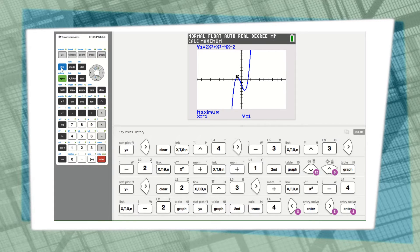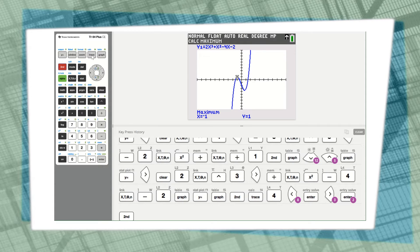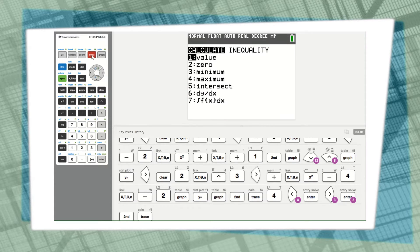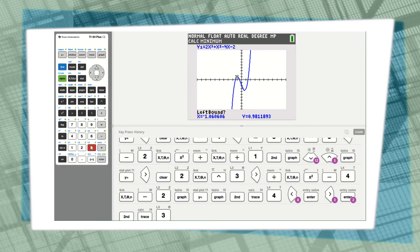Now let's go find the minimum. I'm going to hit second calc or trace, and this time I'm going to choose option 3 for the minimum.